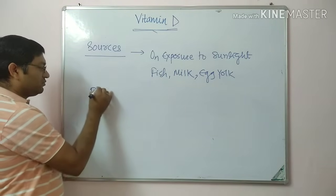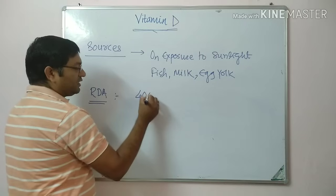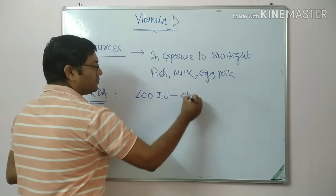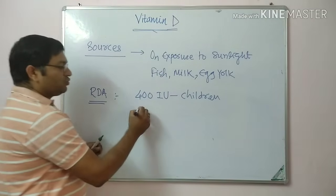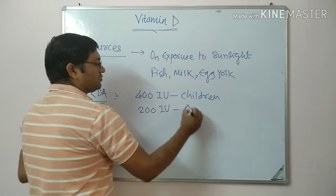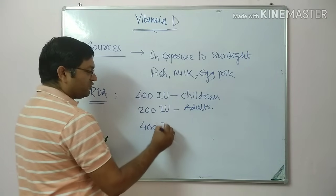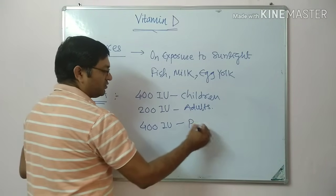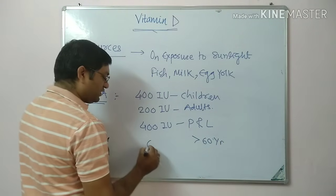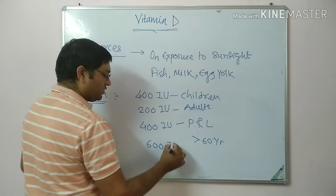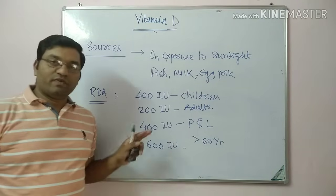Now coming to the RDA. It is 400 international units in children due to their growing age, and 200 international units for adults. In pregnancy and lactation it is 400 international units. In elderly people above the age of 60 years, the requirement is 600 international units.